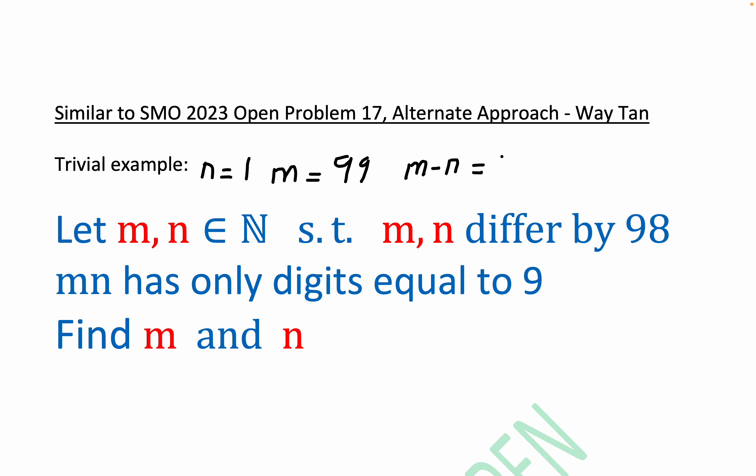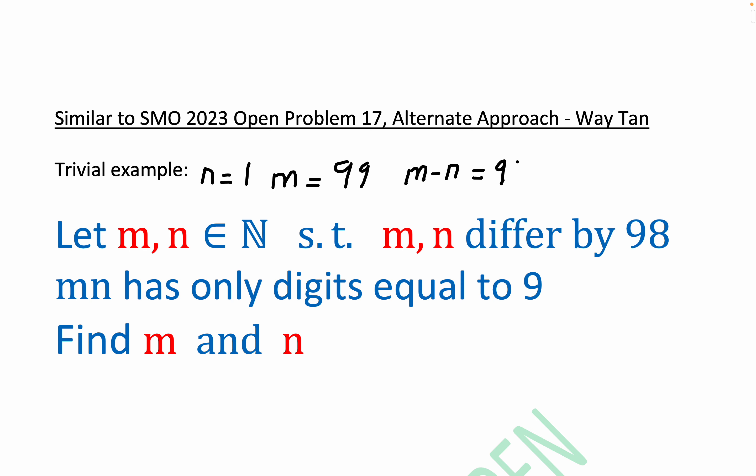But the product is equal to 99, which we want to look at in a slightly more general way, but this is a trivial special case, a two-digit version of it. And of course, mn is equal to 99.